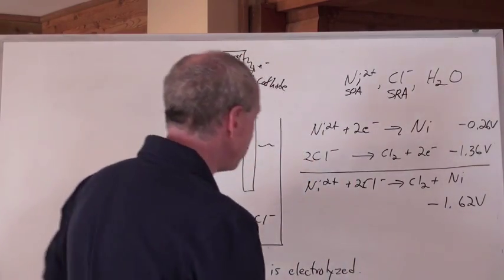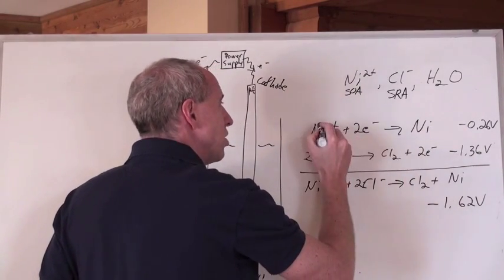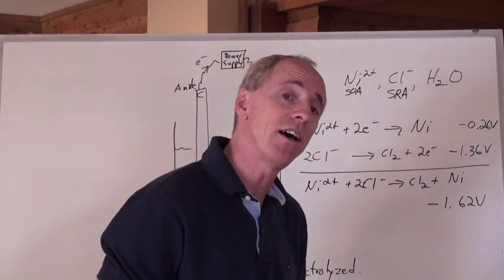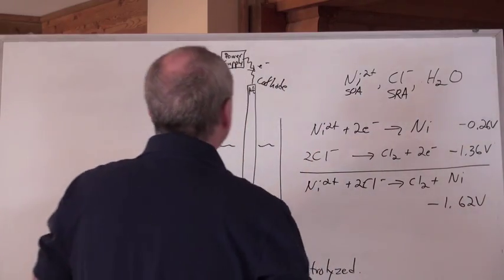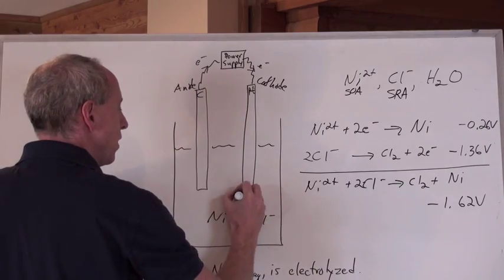And what's going to happen is, you are going to get reduction and oxidation. Reduction of nickel ions into nickel. Reduction occurs at the cathode, R and C, the two consonants go together. So that means that right here at this cathode, this is where the nickel goes up, and it's going to form nickel solid.